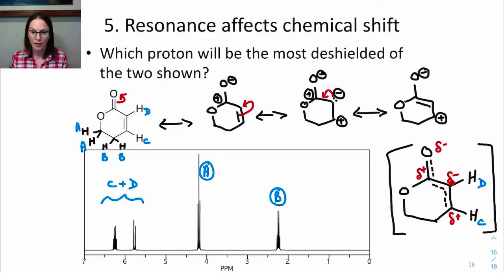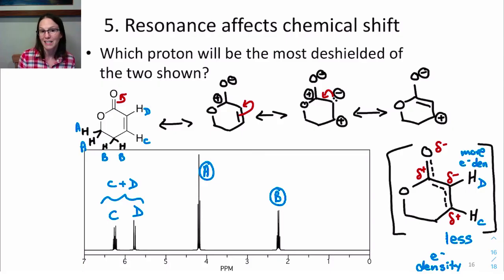Conversely, there's a partial negative on the carbon bound to proton D. So that means higher electron density or more shielded for that proton. So proton D gave rise to the signal around 5.8, more shielded. And proton C gave rise to the signal at 6.3, more deshielded, or less electron density.